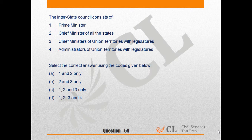Additionally, the Interstate Council also consists of: governors of states under President's Rule, six members of cabinet rank in the union council of ministers to be nominated by the Prime Minister, and four ministers of cabinet rank as permanent invitees.